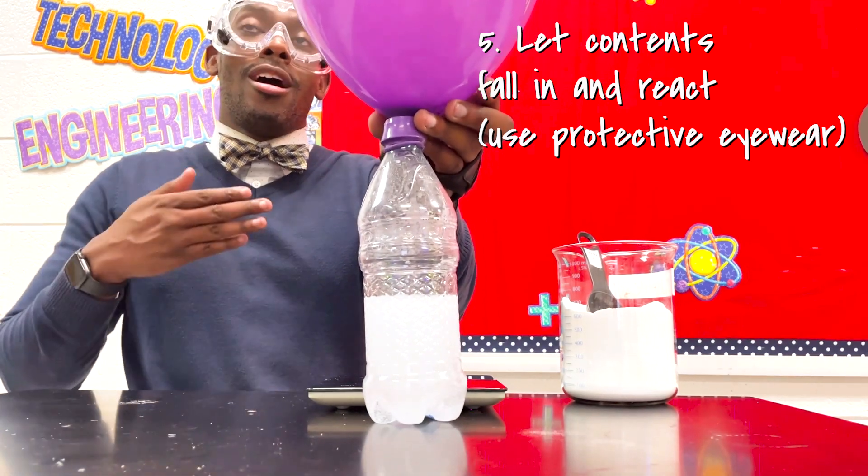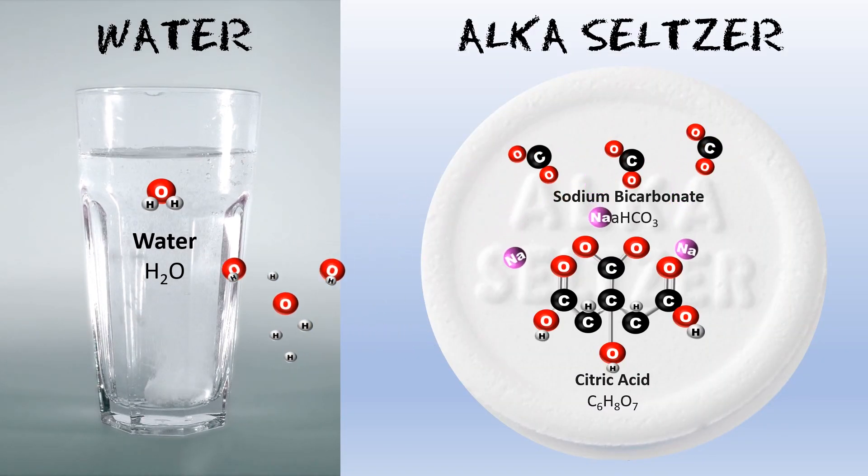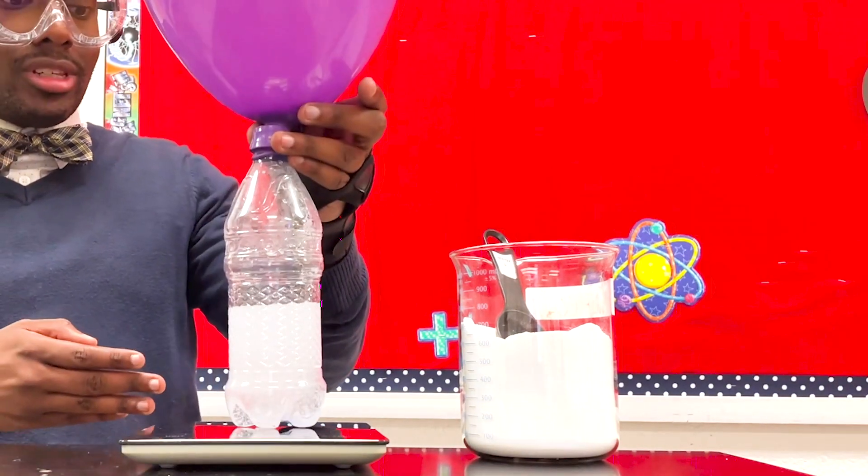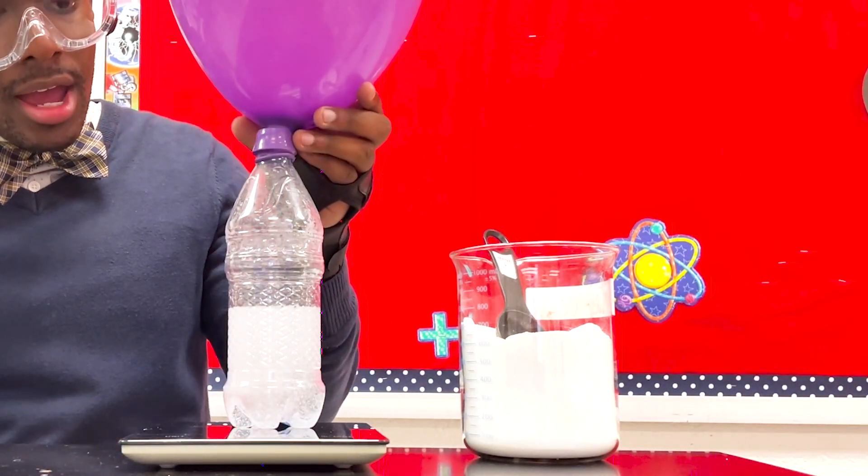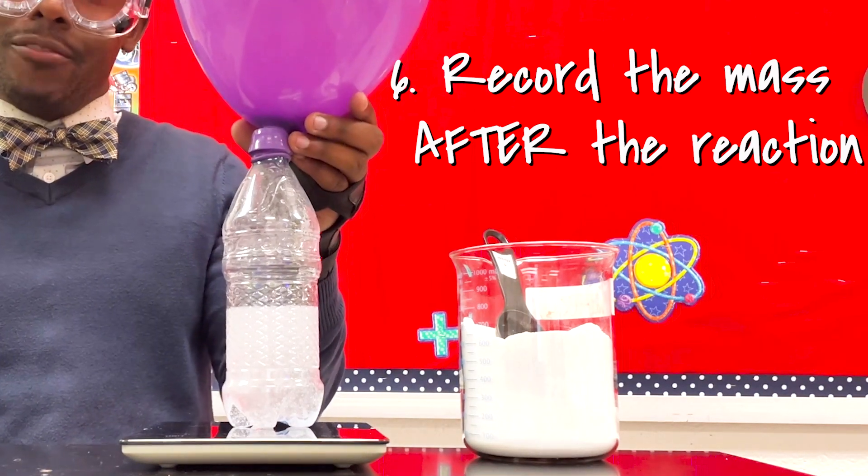Let the Alka-Seltzer fully react. Awesome, our sodium bicarbonate and citric acid has now been rearranged. So let's put it back on the scale and record the mass again after the reaction has occurred.